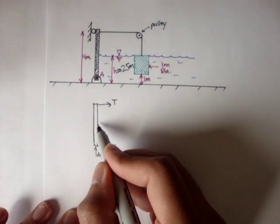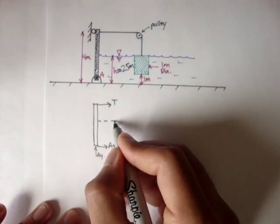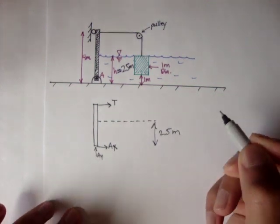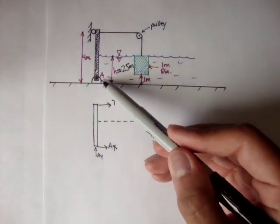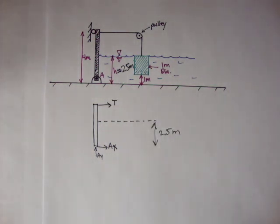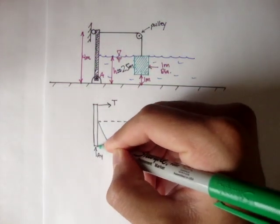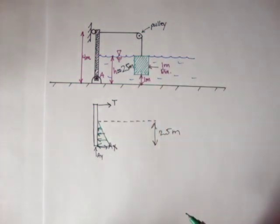So at 2.5 meters, if this is 4 meters, we can say that's about 2, a little bit more than 2. So this distance here is about 2.5 meters, right? And at 2.5 meters, that's when the gate begins to open. Now, since this is a surface that's submerged underwater, we're going to have a pressure distribution on the part that is submerged. And that pressure distribution, since this is zero pressure, it's going to look something like this.